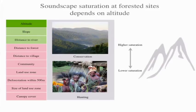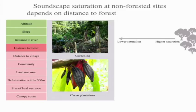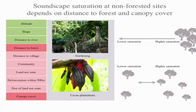We also looked at the non-forested sites separately, and that story was a bit more complicated. In the mornings, the distance from continuous forest was the most important variable — the further you go from a continuous forest, the less saturated the soundscape is. But in the evenings, the number of remaining trees in the gardens and cocoa plantations was the most important thing. The more trees you leave out in the gardens, the more saturation you have — because in the evenings you'd see all these birds and insects perching in the remaining trees making a lot of noise.